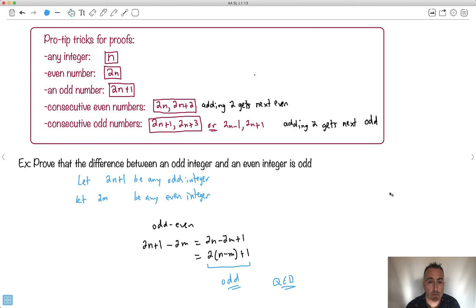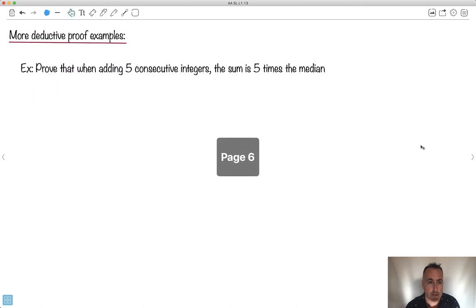So let's try to do another example. Prove that when adding 5 consecutive integers, the sum is 5 times the median. I guess I need to get myself an integer. I'll just make 5 consecutive integers. So my first one n, the next one n plus 1, next one after that must be n plus 2, n plus 3, n plus 4.